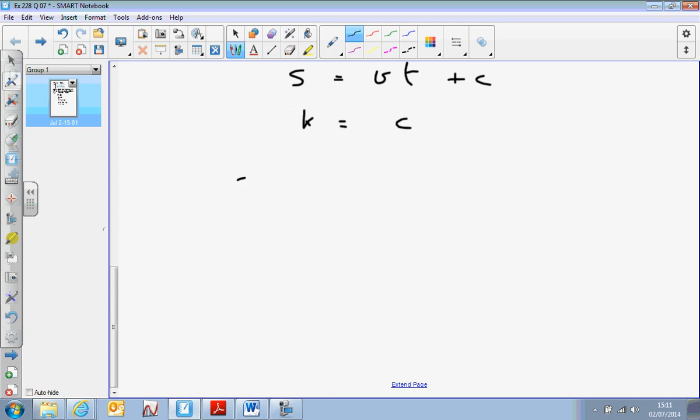So I can finally write s equals vt plus k, which I probably wouldn't have bothered to do. I could just as easily have left it at c.